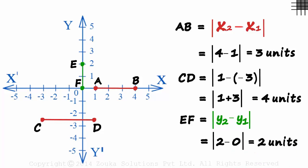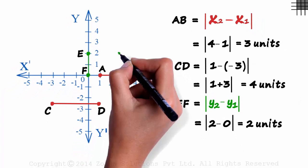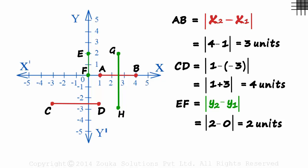And it will be the same for any segment parallel to the y-axis. What is the distance between G and H? The y-coordinates of G and H are 2 and minus 3. So GH will equal absolute value of 2 minus minus 3 which is 5 units.